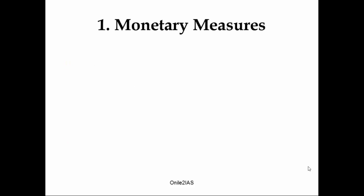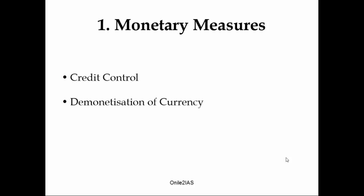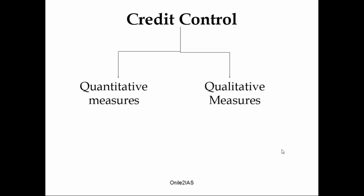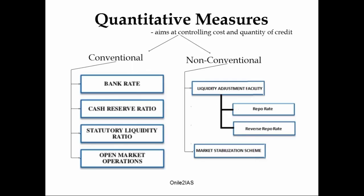Monetary measures are the measures that are generally taken by the central bank of any country. In our country it's the RBI. So let's look at what RBI does to control inflation in our country. First is credit control, then demonetization of currency, and then issue of new currency. Credit control is divided into quantitative measures and qualitative measures.